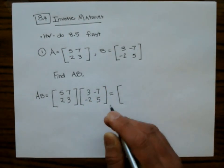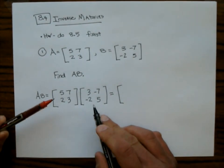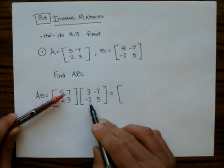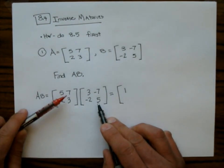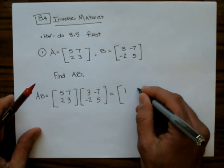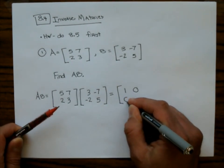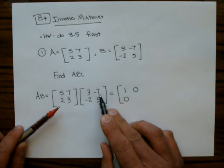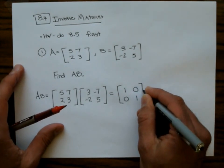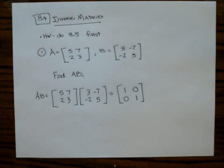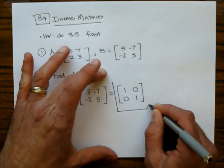We did that thing with the Coyote and the Roadrunner. 15 minus 14 is 1. Negative 35 plus 35 is 0. 6 minus 6 is 0. And negative 14 plus 15 is 1.